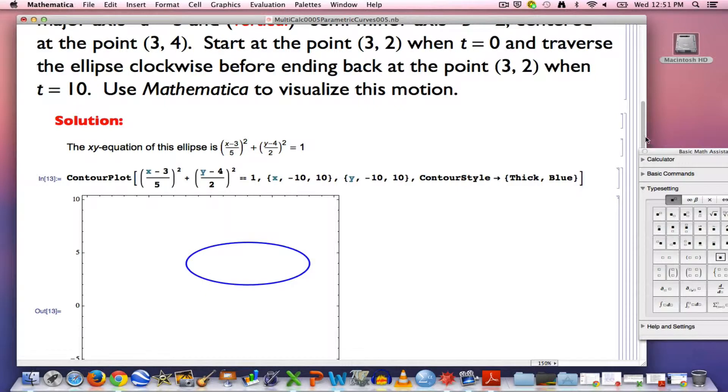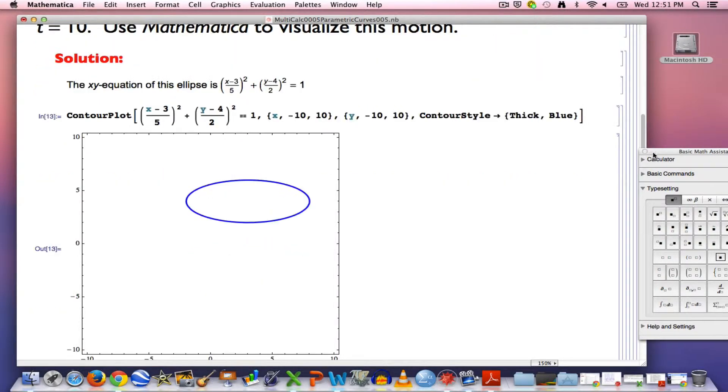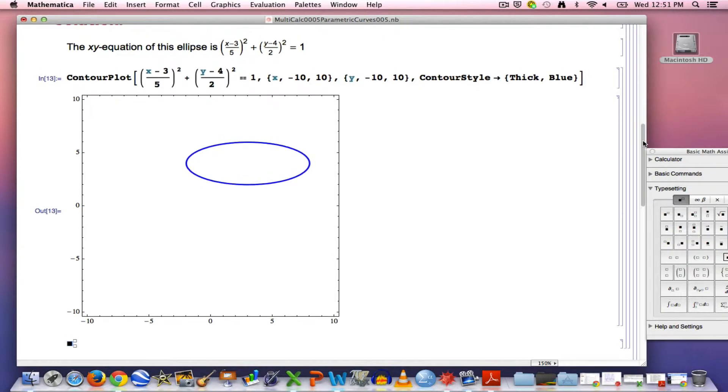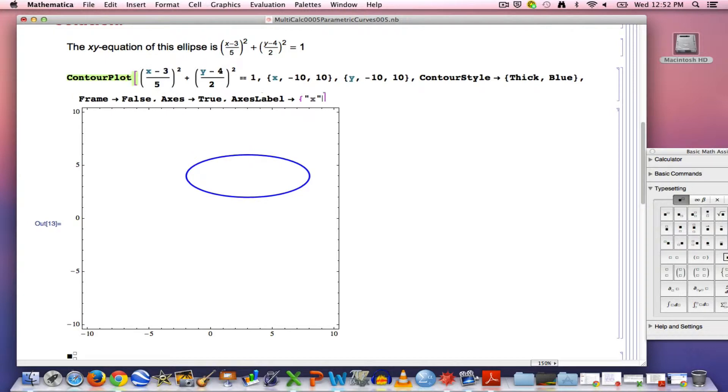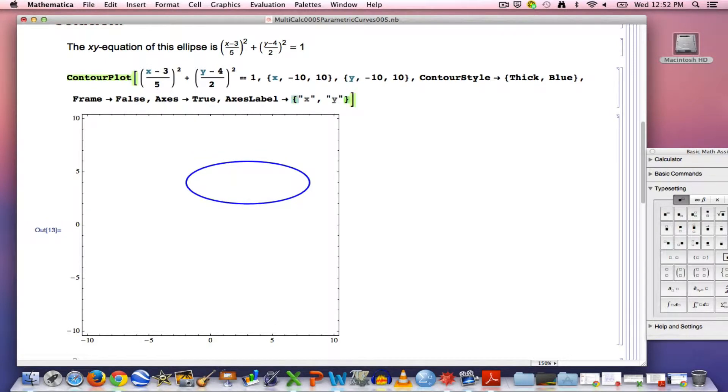Contour plot by default puts its graphs inside frames, which is what you see here, this box. I like to get rid of the frame, so I'm going to add an option, frame arrow false. I also like to add axes, axis arrow true, and let's label the axes, axis label, arrow, in quotes, x and y, and we'll make those bigger, so we can see them better.